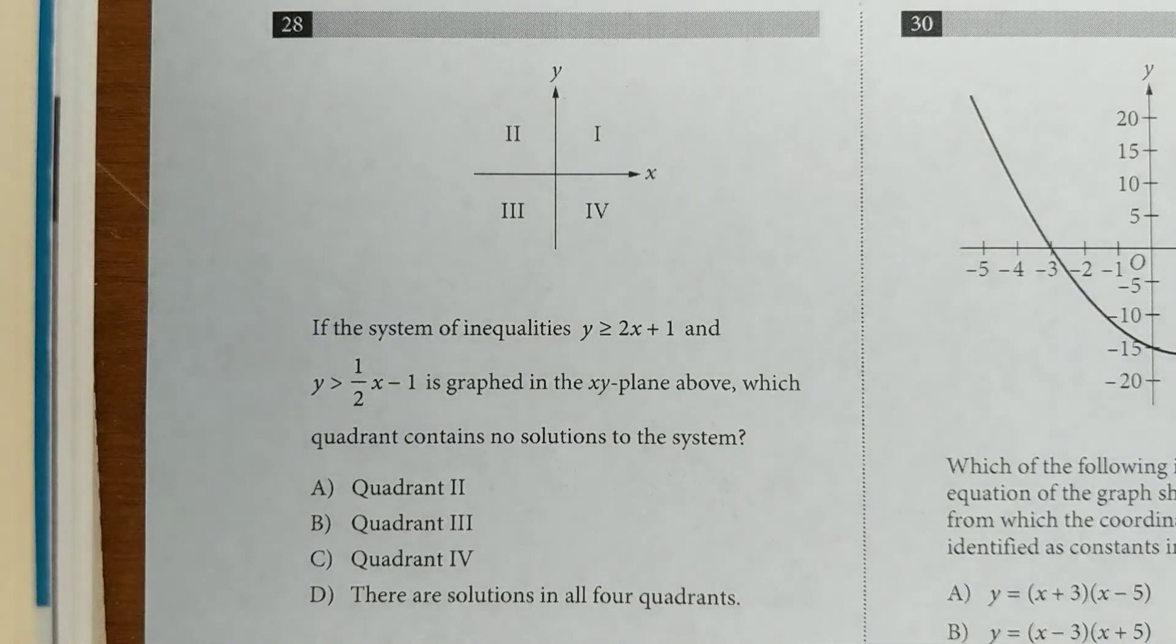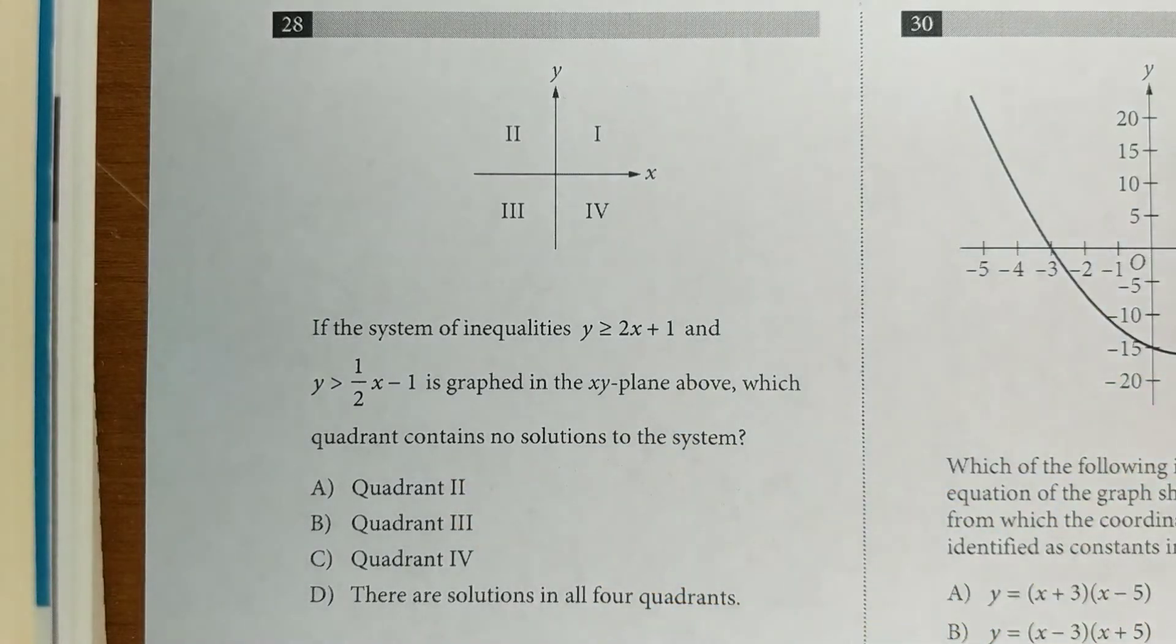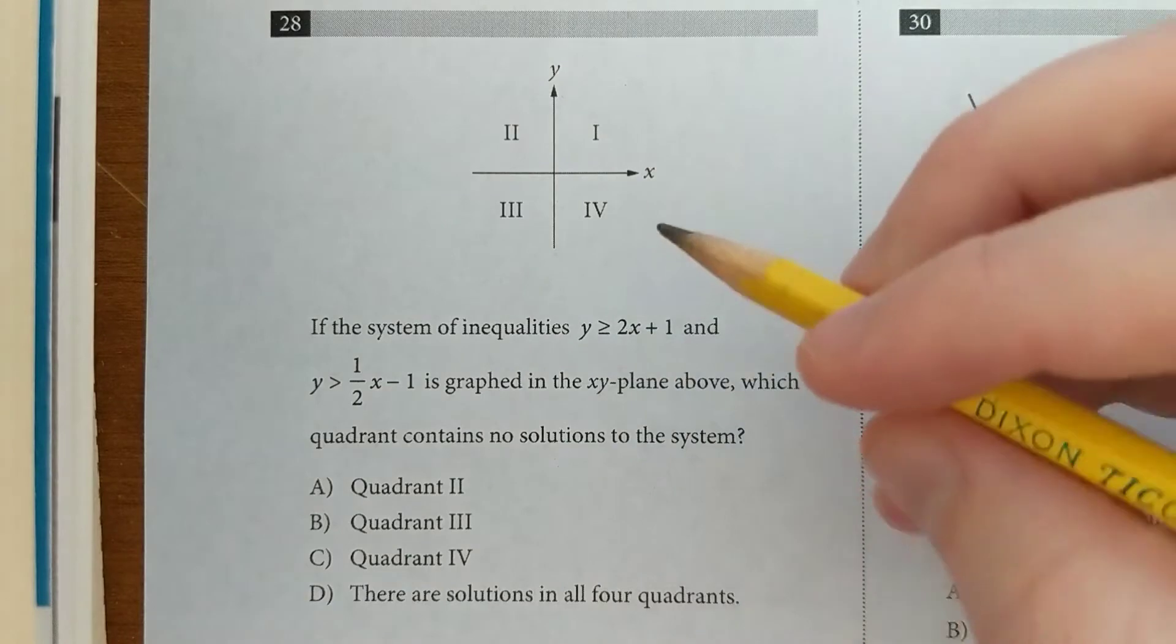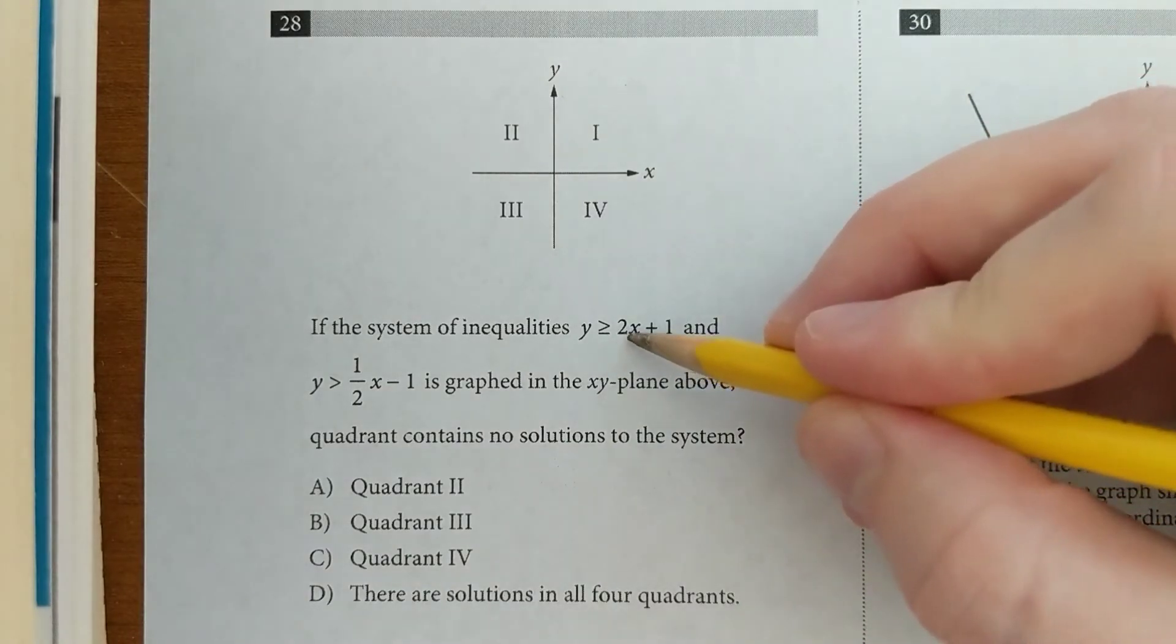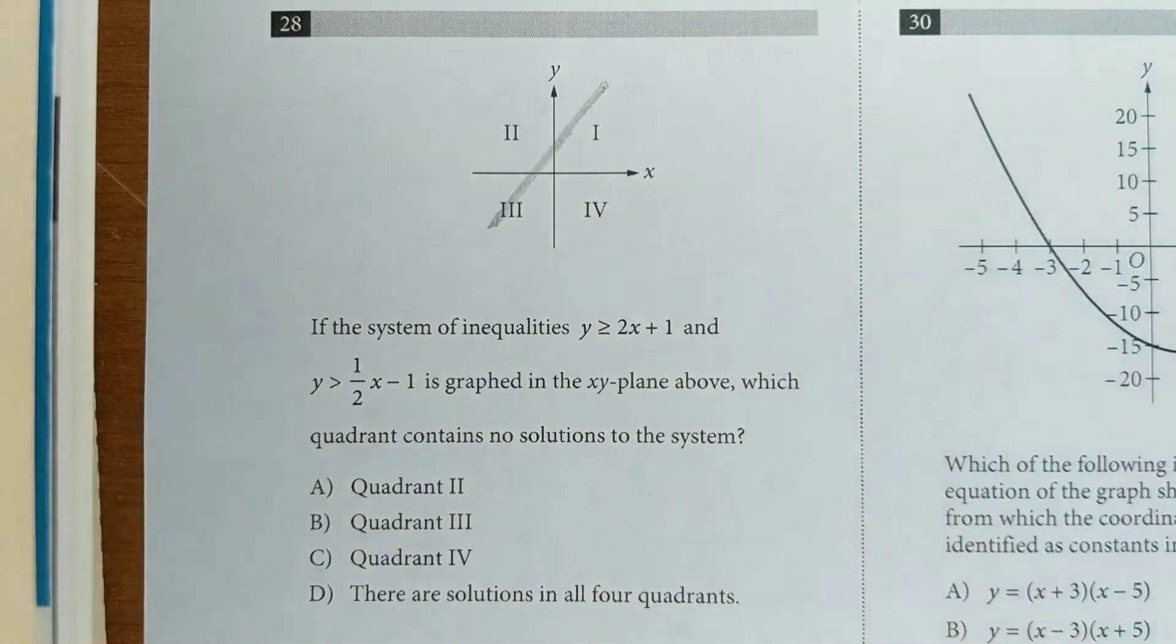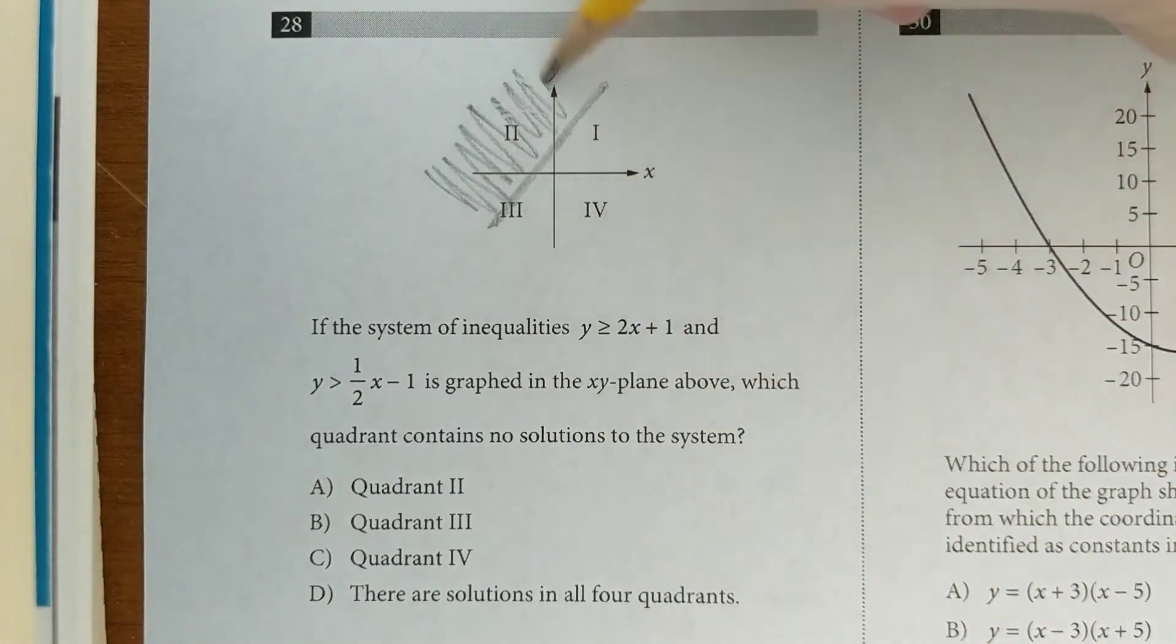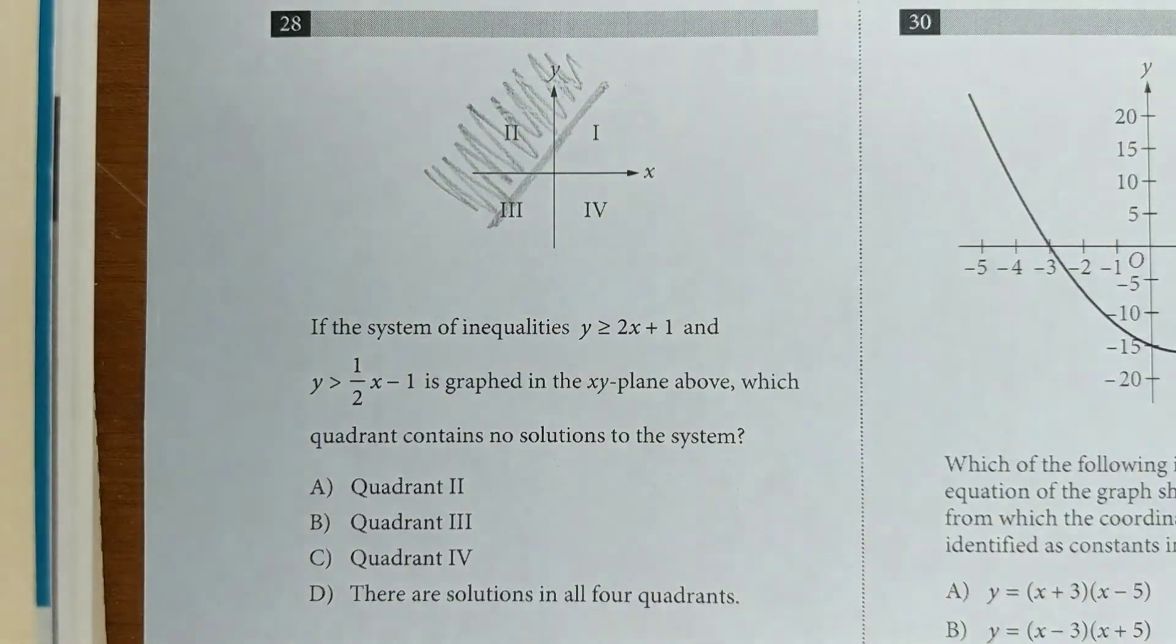In this system of inequalities, they want to know which quadrant contains no solutions. So we're just going to graph each of them ourselves. We'll start with this one. It's got a positive slope, positive y-intercept. So something like that. And it's greater than or equal to, so this one's hitting the 1st, 2nd, and 3rd quadrants.